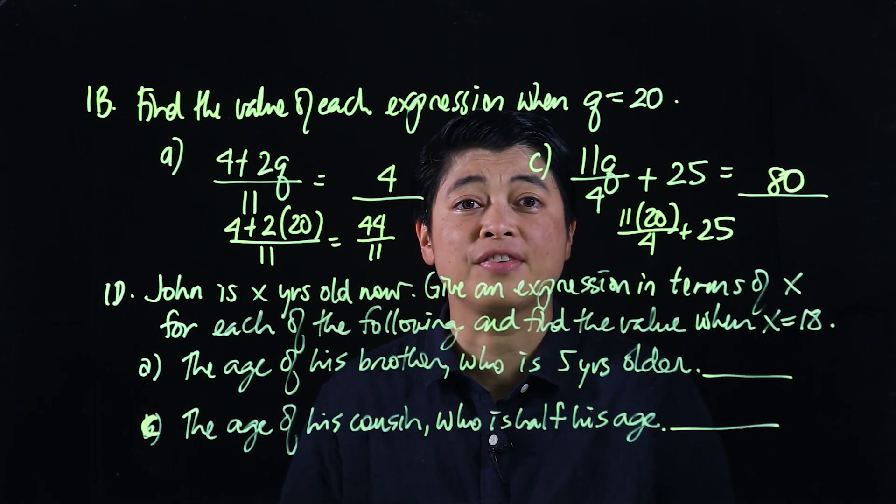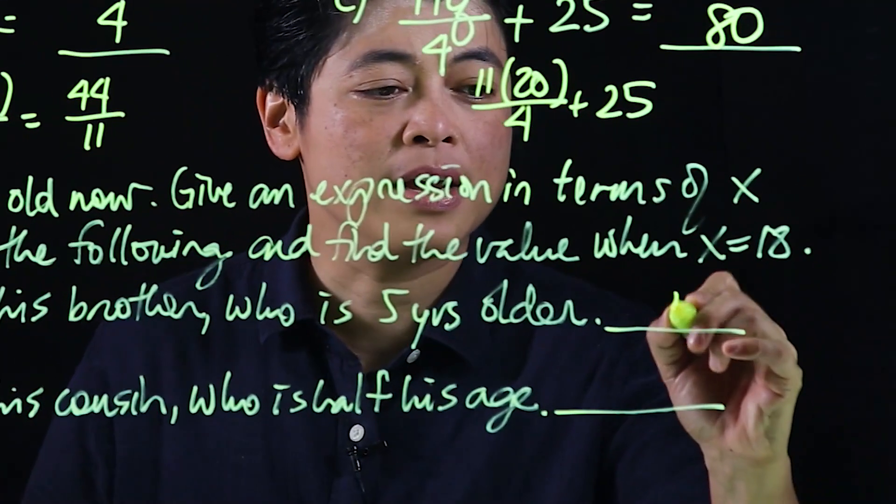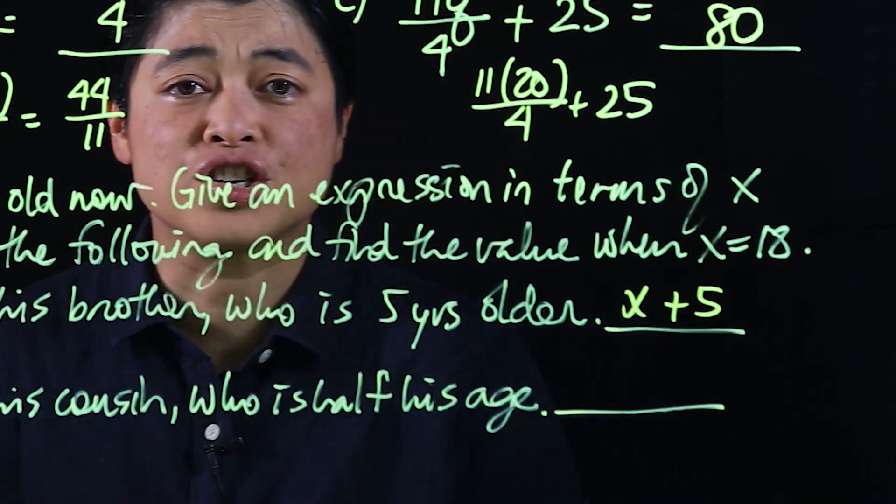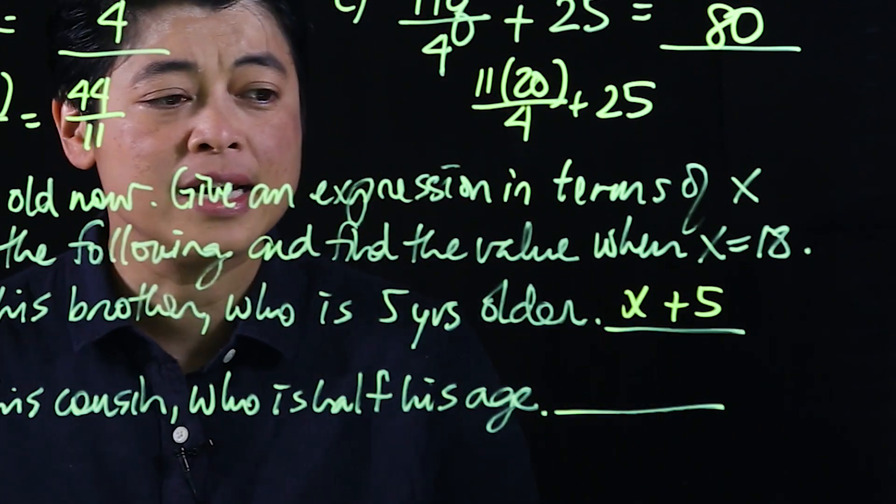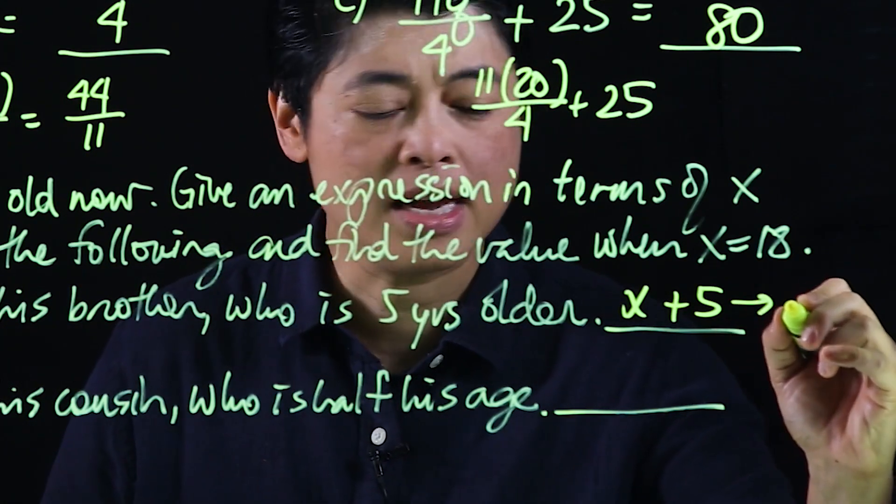So letter A says the age of his brother who is 5 years older. So if his brother is 5 years older, that will be plus 5 to his age. So which means if he is 18, that means this must be 23.